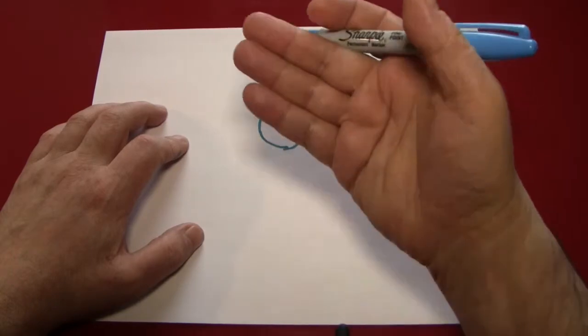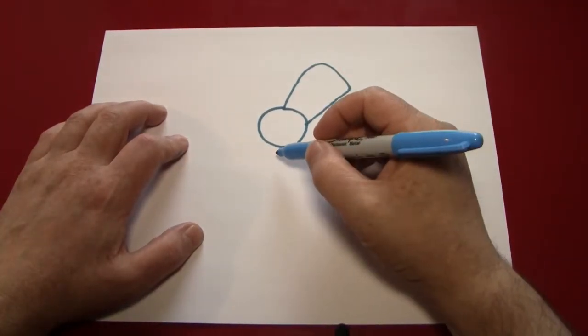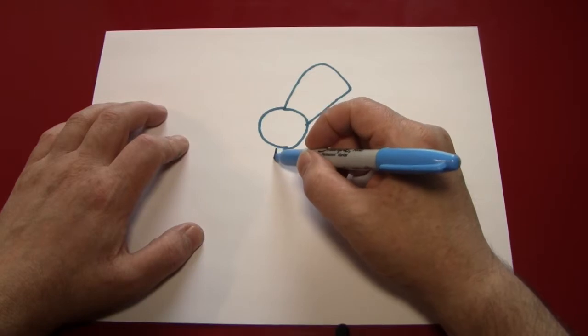Now, the first petals you draw will be the petals on the front of the flower, the petals you see closest to you. Now, I'm going to make three of those.